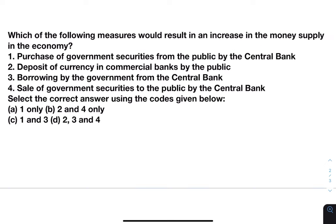You must read about capital gains tax; it is an important topic for this year's prelims. Next: which of the following measures would result in an increase in the money supply in the economy? The government needs to increase the money supply to put more money in the hands of consumers so that they spend more — when they spend more, demand increases, businesses produce more, buy raw materials, investment increases, and in this way the economy grows.